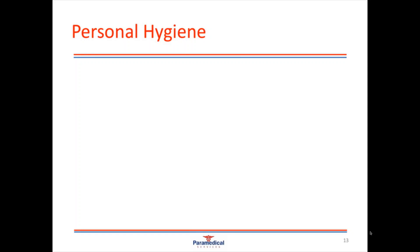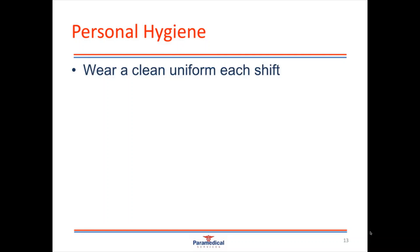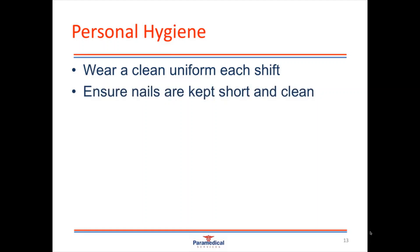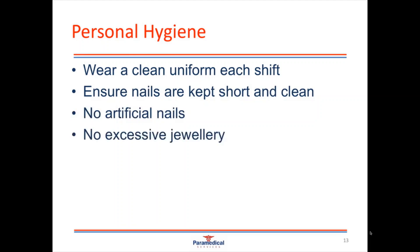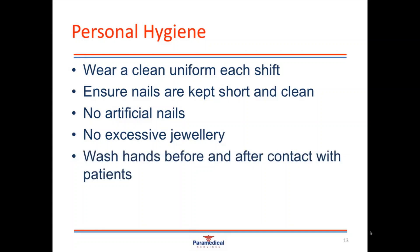Personal hygiene is another important aspect of infection control, and by practicing good personal hygiene we help to break the chain of infection. It's important to wear a clean uniform with each and every shift. Ensure nails are kept short and clean — no artificial nails. Artificial nails, long nails and excessive jewelry are breeding grounds for bacteria and are often not cleaned appropriately during hand washing. Keep nails short, avoid artificial nails and excessive jewelry, and wash hands before and after contact with every patient.